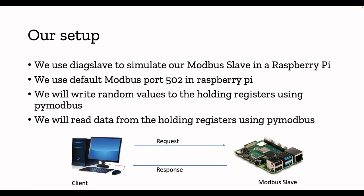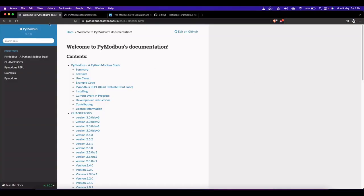We will write some random values to the holding registers using PyModbus, which is a Python module. It's a very mature Python module with a lot of community support. You can install it simply by running 'pip install pymodbus'. We will then write a simple Python program that frequently reads data from the holding registers, specifying which register to read and how many registers to read.